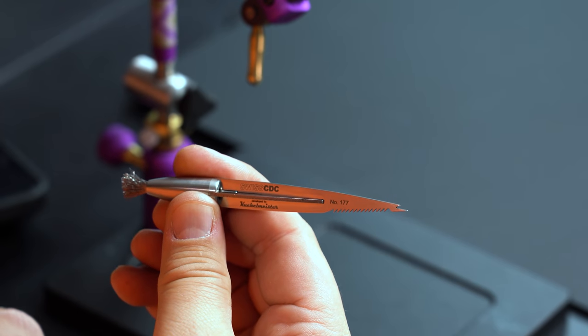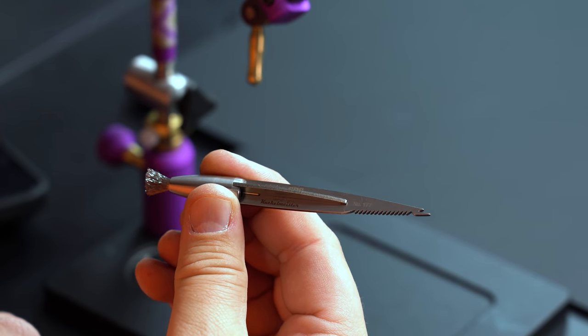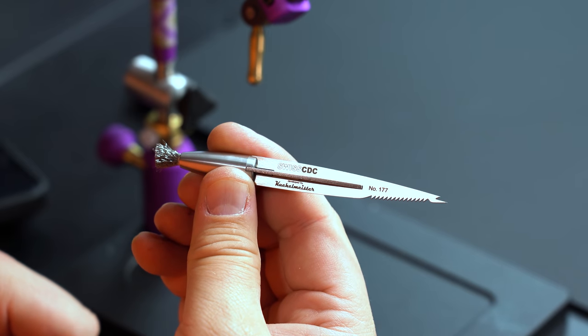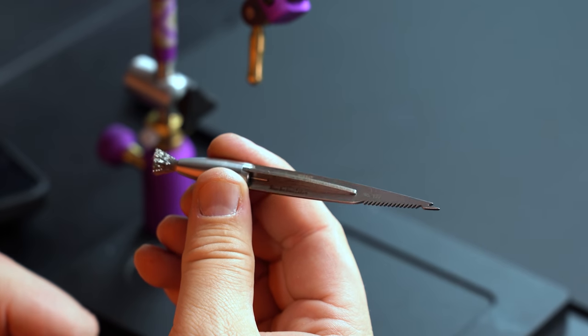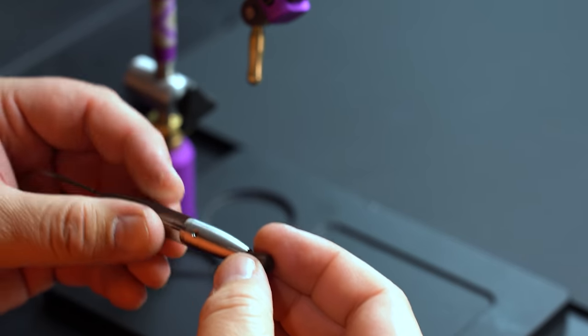We weren't sure what the back end was used for so we started messing with it. This point on the very end is actually used to fold soft hackles, and this weapon looking part of it is actually really good for cleaning out some underfurs and things like that.